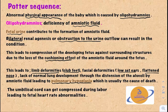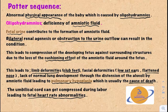Usually pulmonary hypoplasia is the cause of death. The umbilical cord can also get compressed during labor, leading to fetal heart rate abnormalities, and this is another problem encountered in patients with oligohydramnios.